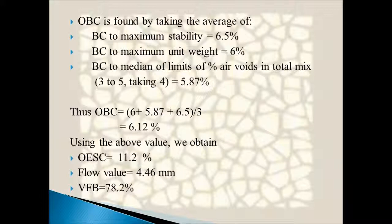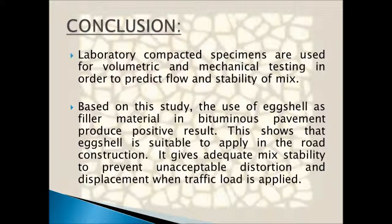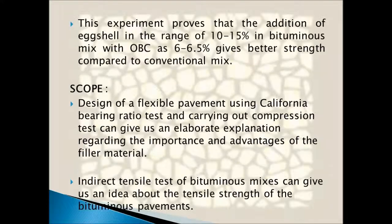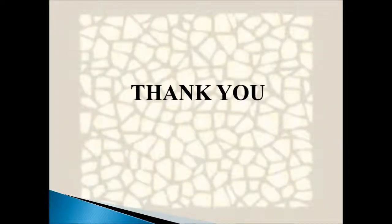In conclusion, a number of laboratory tests were performed to check flow and stability. Based on this study, we conclude that eggshells are a good engineering material with good properties that can fill the cavities of flexible pavement. It is proven that when eggshell is added in the range of 10–15% in the mix, with an optimum bitumen content of 6 to 6.5%, the strength of the flexible pavement is high.